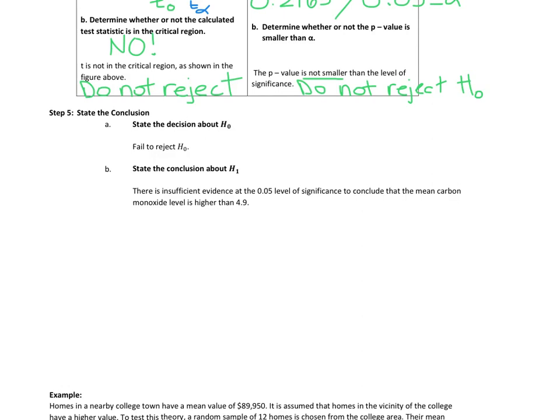And then if we do not reject, what kind of evidence do we have? We have insufficient evidence. We have insufficient evidence at the alpha equals 0.05 level of significance to conclude the alternative that the mean carbon monoxide level is higher than 4.9 parts per million.